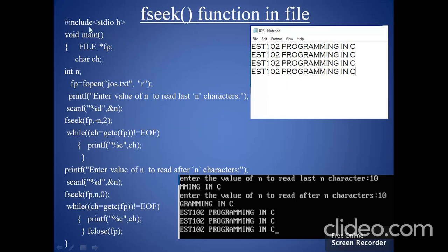Let's go to the program. At first, we will write the header file: #include stdio.h. Inside this header file, all the file functions will be present. Then we will have the void main section. Inside the main section, we will declare the file: FILE *fp. Then we will use two variables: char ch and int n.